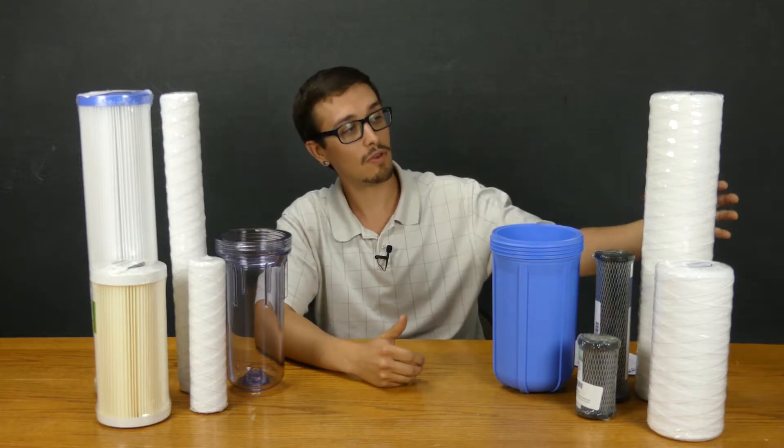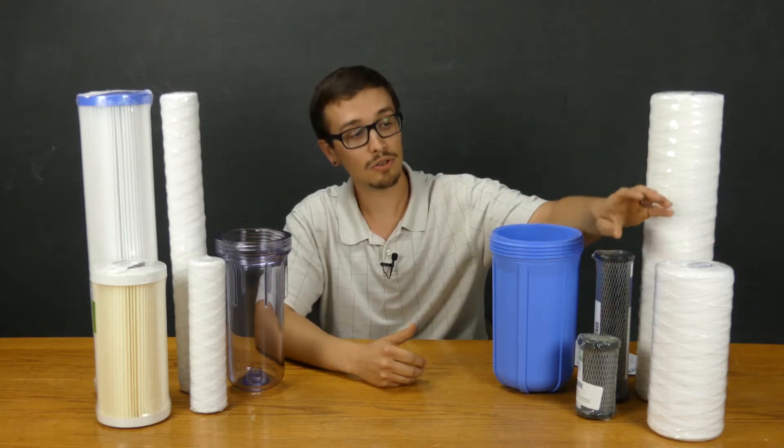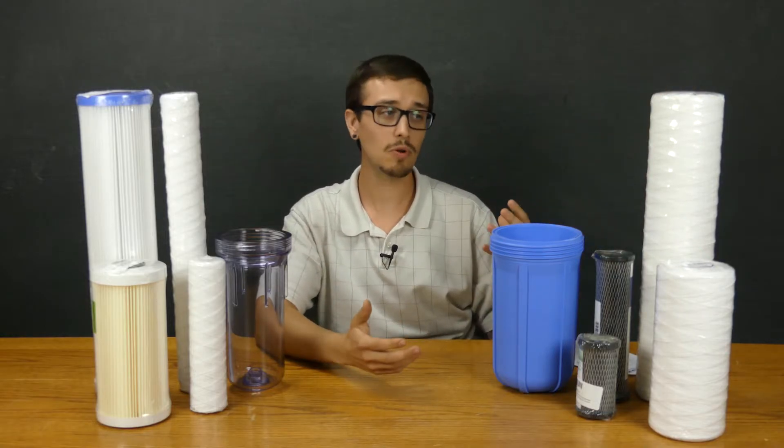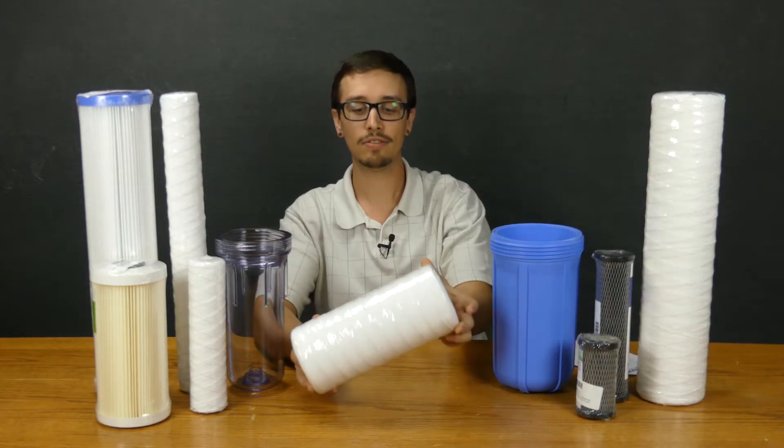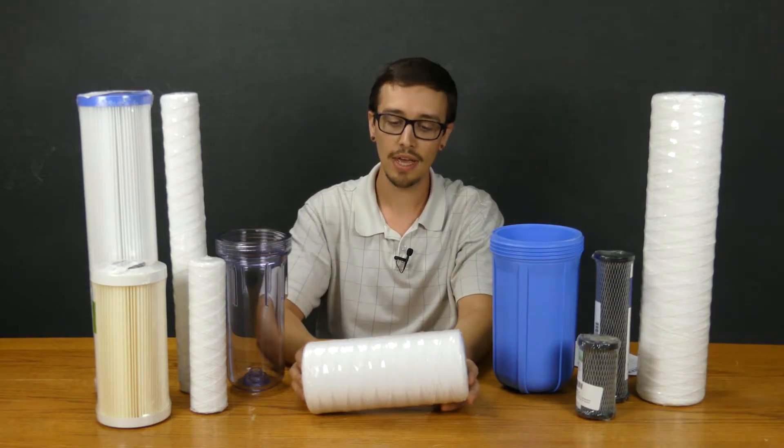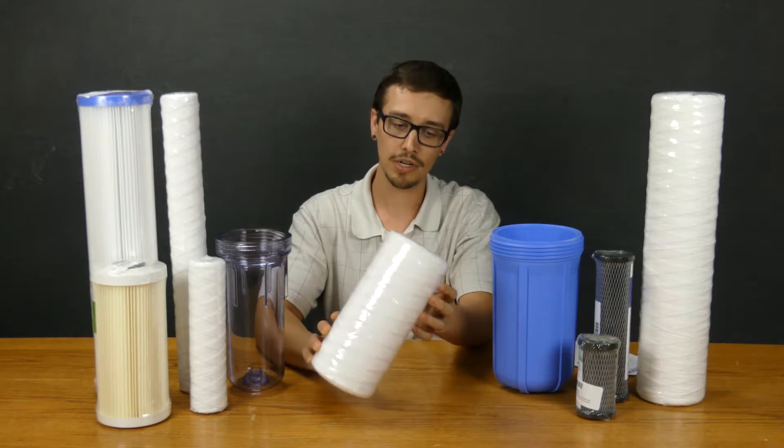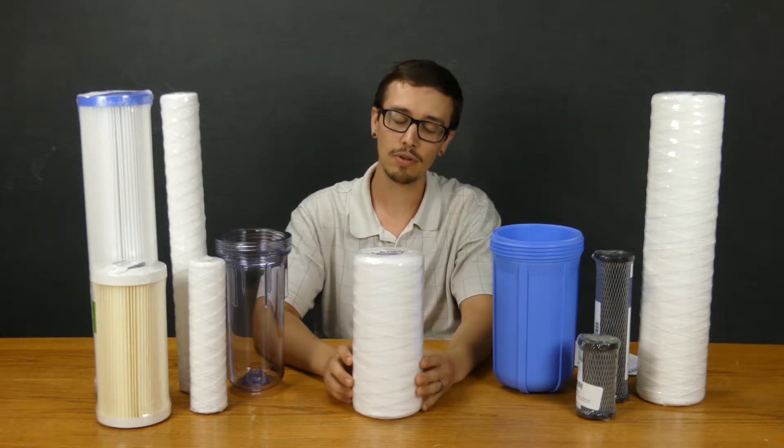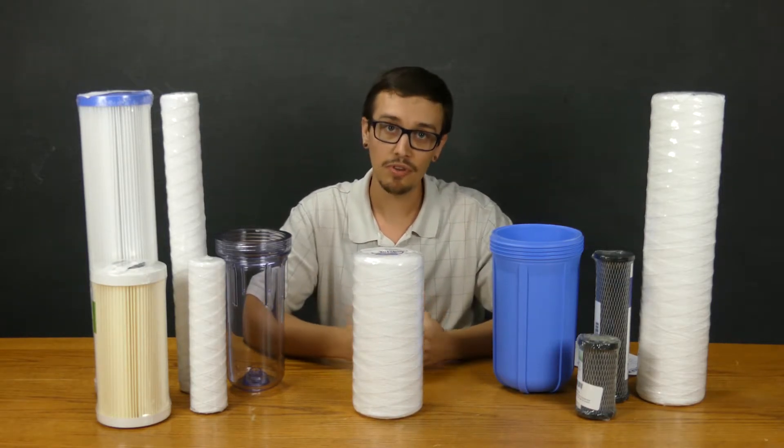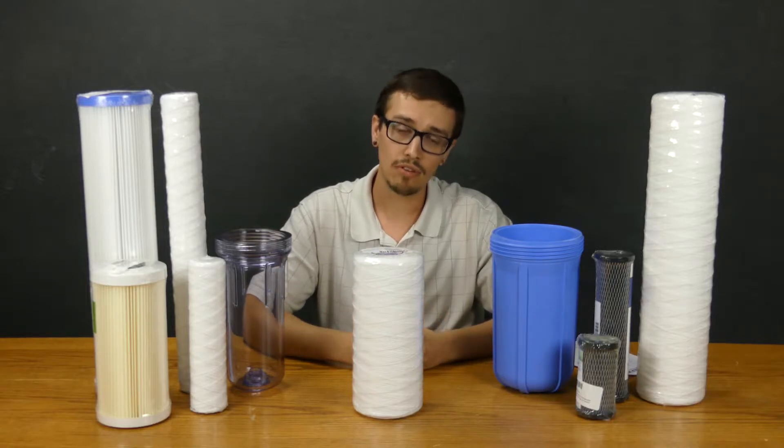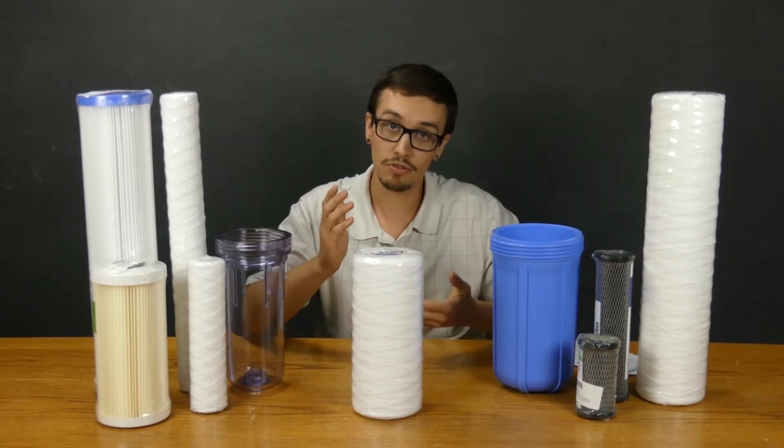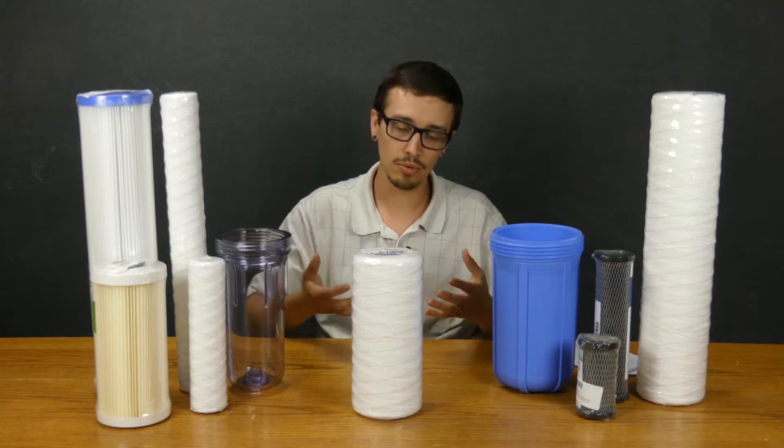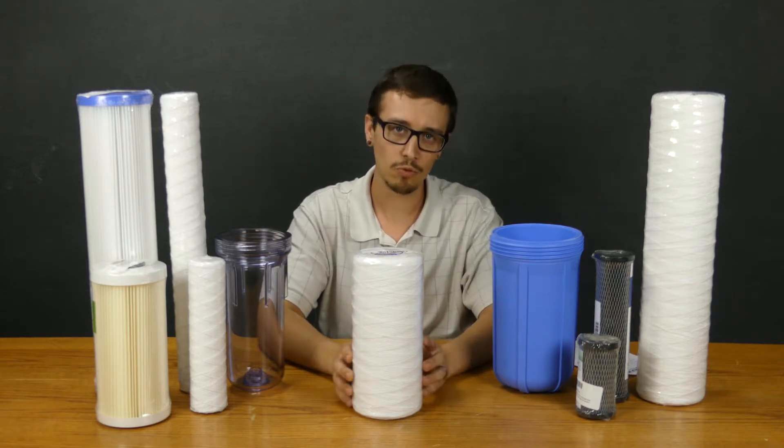Let's start over on the left-hand side. We've got these string wound filters here, and string wound almost looks like a big ball of yarn. It's a very tightly wound string material, and these filters are generally pretty inexpensive and quite effective at filtering out sediment. There's really not a whole lot you would use this type of filter for other than filtering out sediment, sand, dirt, debris, and even some light rust particles.